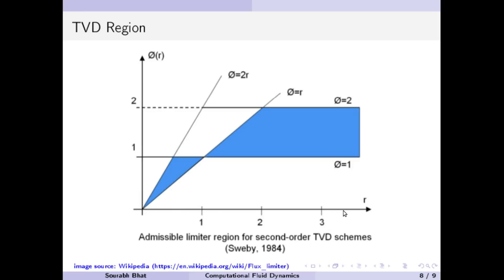Given a value of r, the question is: what should be the ideal value of phi such that our solution will not be oscillatory? The answer is that phi should lie within this blue region. I will not go into the theory of why this blue region is non-oscillatory or TVD — you can find that in any standard CFD textbook in much more detail.